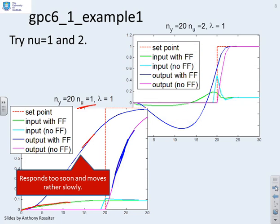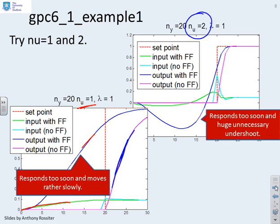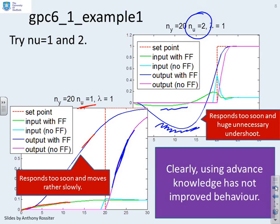If I increase the control horizon to 2, you'll see the behavior gets even worse. You get this massive undershoot before it then moves quite fast to the new target, and the input has a similar shape. So what have we seen? The key thing is using advanced knowledge about the target has actually made behavior worse, not better.